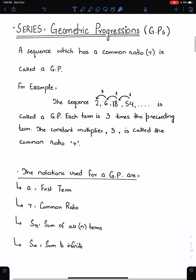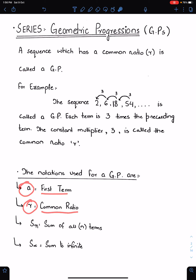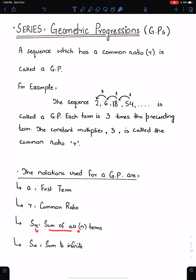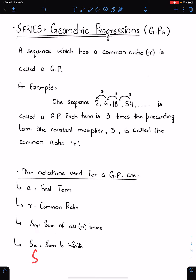The notations used for a GP are: small a means first term, small r means common ratio, S sub n means sum of all n terms, and S infinity means sum to infinity.